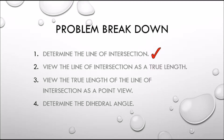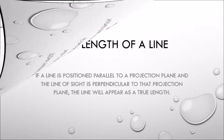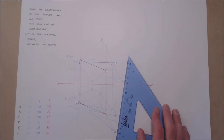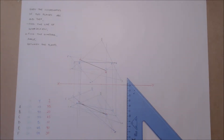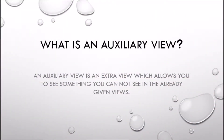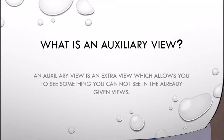Now that we have determined the line of intersection, we must view the line of intersection as a true length. A line will appear as a true length if the line is parallel to the plane of projection and the line of sight is perpendicular to the projection plane. To get the true length we must look perpendicular to the line and set up a projection plane parallel to the line of intersection. For this we must use an auxiliary view. An auxiliary view is an extra view which allows you to see something you cannot already see in an already given view.